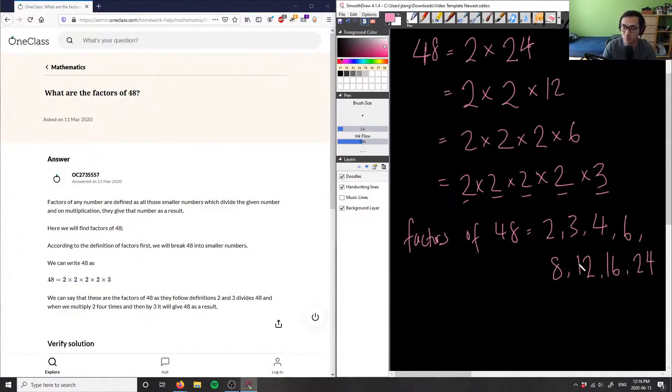2, 3, 4, 6, 8, 12, 16, and 24. And these are all the factors of 48.